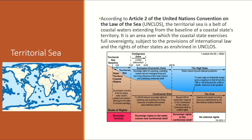Territorial Sea is defined in UNCLOS in Article 2. According to Article 2, the Territorial Sea essentially refers to the coastal state's surrounding waters along its coast. In these waters, the coastal state can exercise its full sovereignty, subject to some exceptions under UNCLOS.